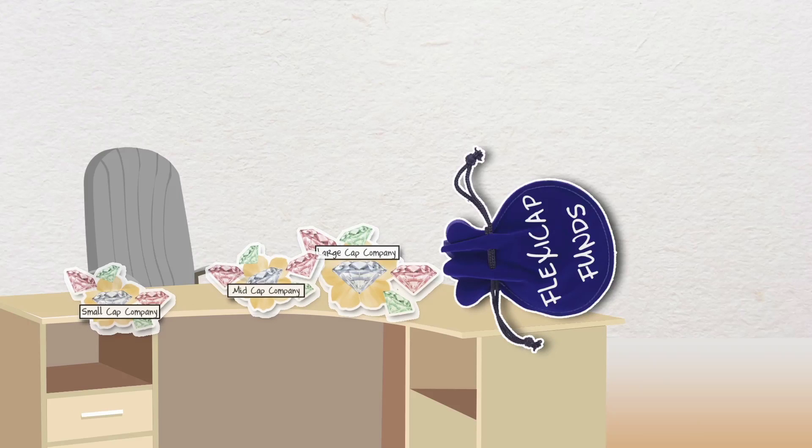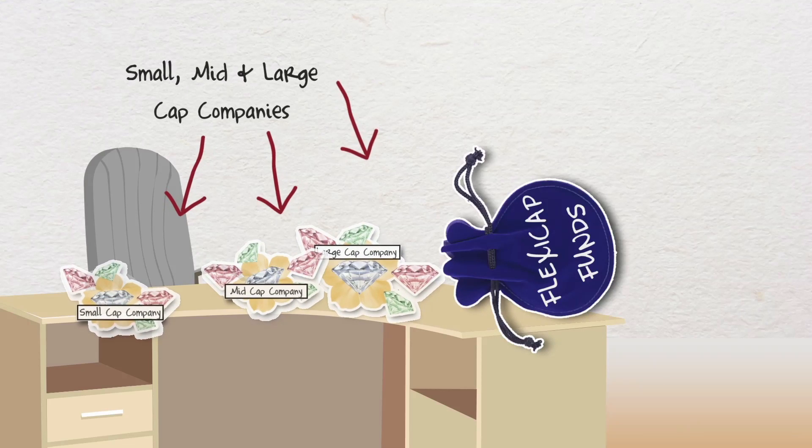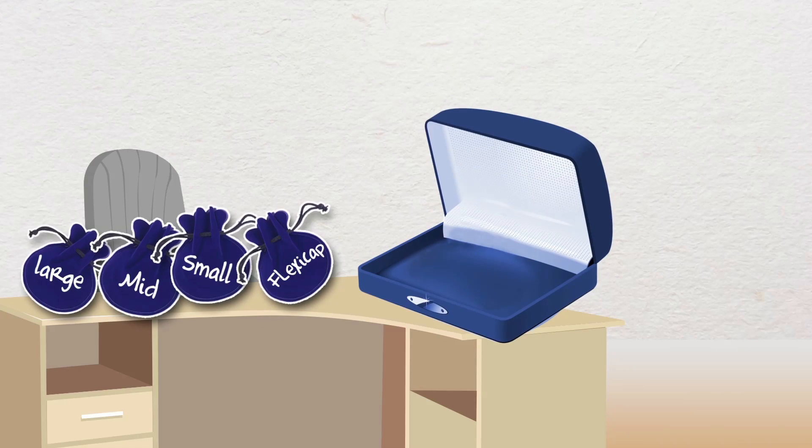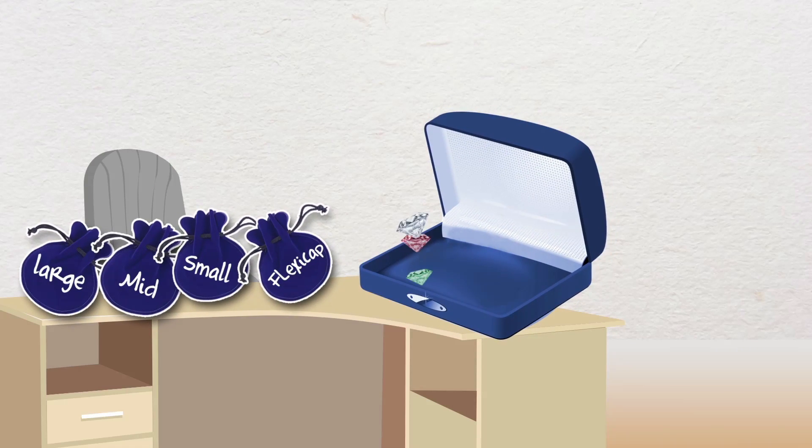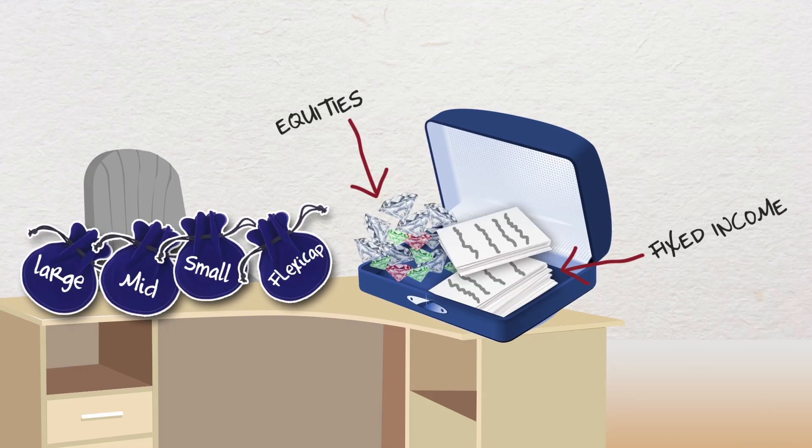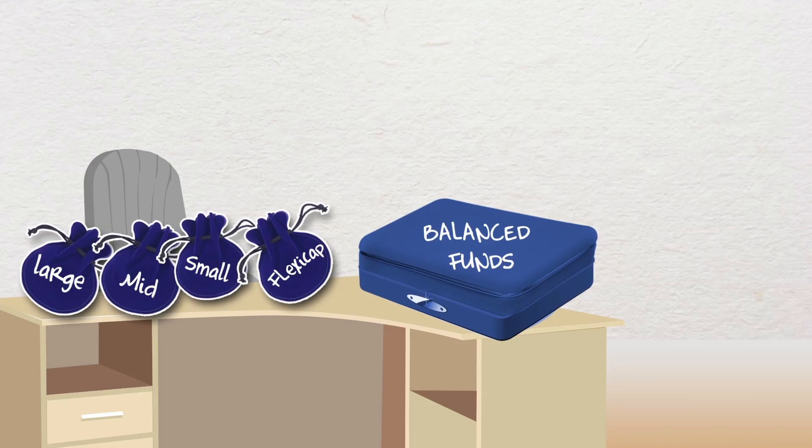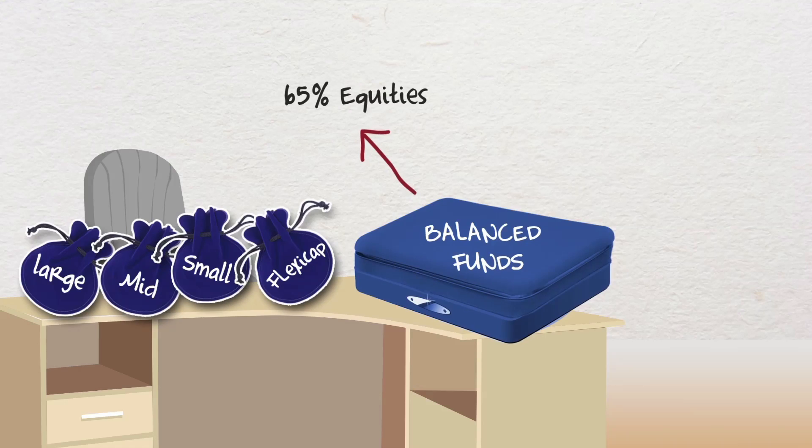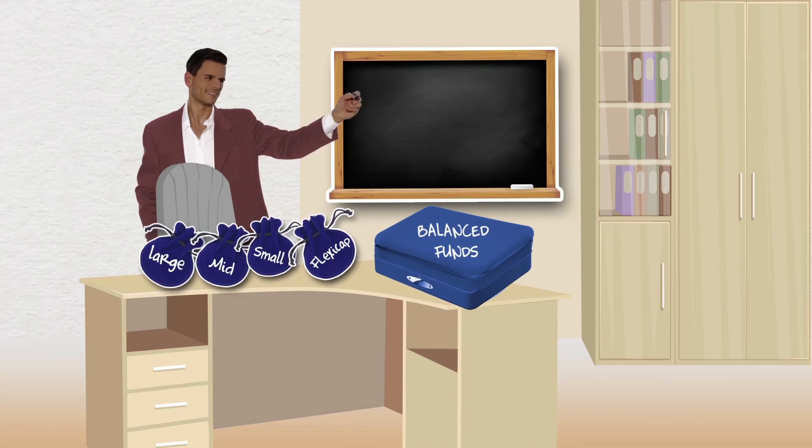And other than pure equity funds, there are also equity-oriented funds that predominantly invest in equities yet have a portion invested in fixed income. These are popularly called balanced funds and would invest around 65% in equities and the rest in fixed income.